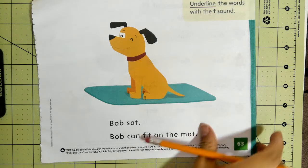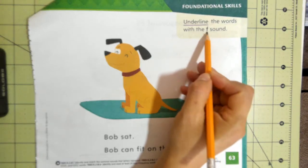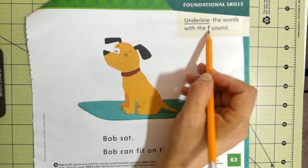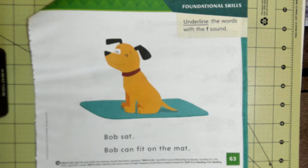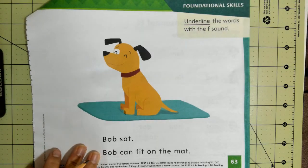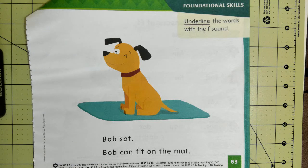Here on page 63, it tells us to underline the words that we find that have the F sound. It can be at the beginning or at the end of the word. You're going to go through the whole story, read it three times to somebody at home, circle any words that have the AH sound, and underline the words that have the F sound.